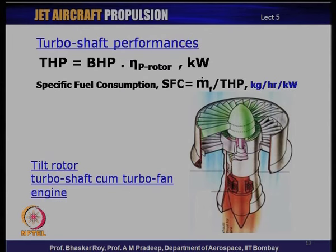The performance of a turboshaft engine is written as THP equals BHP multiplied by the propulsive efficiency of the rotor, and SFC is expressed in kilograms per hour per kilowatt. Both turboshaft and turboprop engines have power as their specification parameter, with SFC shown in terms of kilograms per hour per kilowatt.